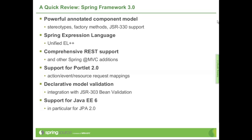Spring 3.0 presented a strong foundation with a stereotype model, composable stereotypes, and bean factory methods — also known as configuration classes, and historically known as Spring Java Config. It's all the same thing. It's an important cornerstone that Spring 3.0 developed and included in the core.